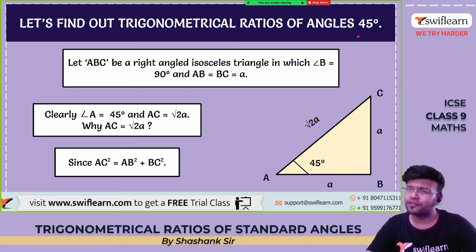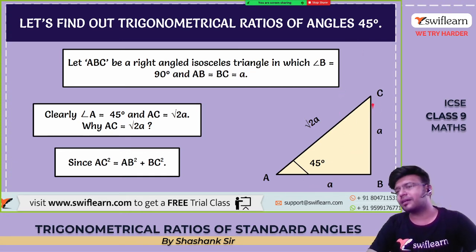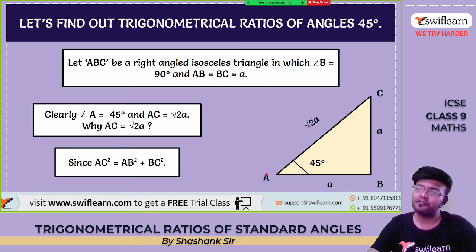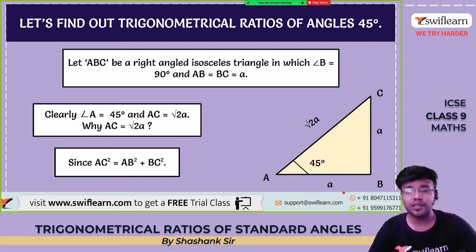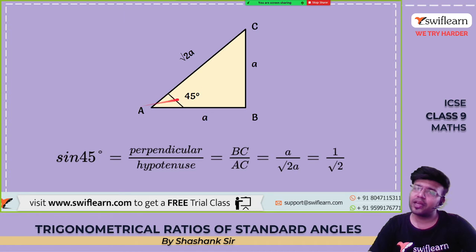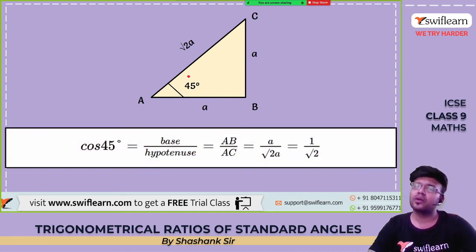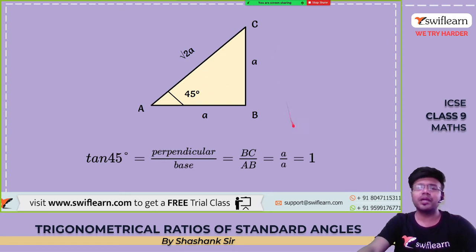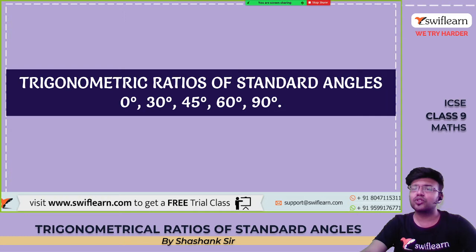For 45°, consider a right-angled isosceles triangle whose equal sides are each a. The hypotenuse by Pythagoras is √(a²+a²) = a√2. Sin 45° = perpendicular/hypotenuse = a/a√2 = 1/√2. Cos 45° = base/hypotenuse = a/a√2 = 1/√2. Tan 45° = perpendicular/base = a/a = 1.